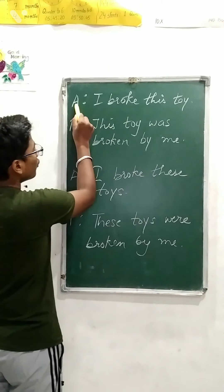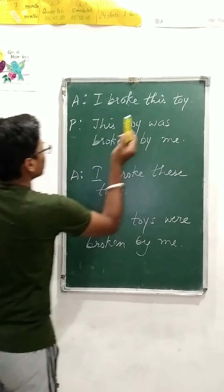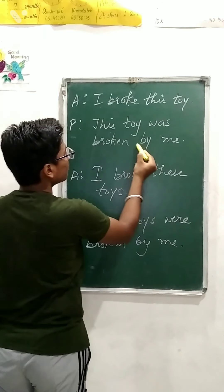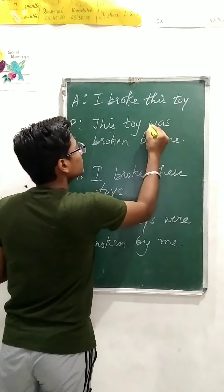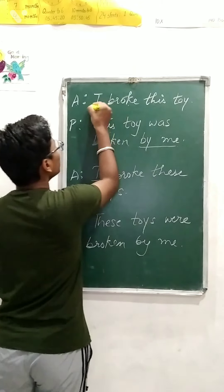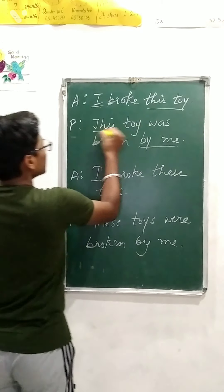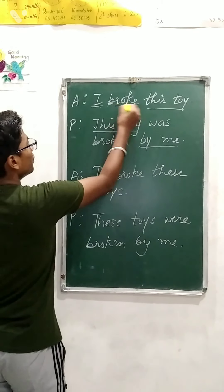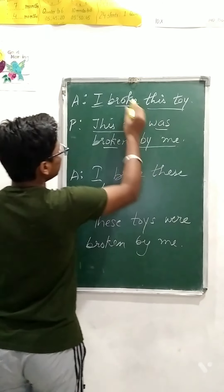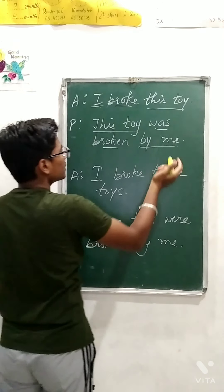Here is another example in active voice: 'I broke this toy.' In passive voice it becomes: 'This toy was broken by me.' 'I' changes to 'by me'. 'This toy' moves to the subject position. 'Broke' changes to 'broken' — that is the third form — and 'was' is used because it is simple past.